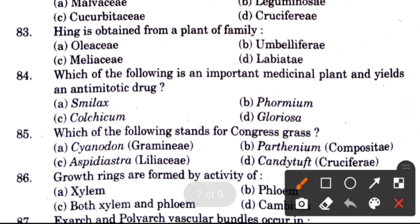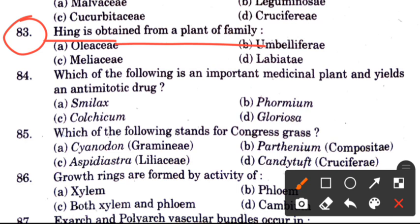Question 83: Hing (asafoetida) is obtained from a plant of which family? Options are Oleaceae, Umbelliferae, Malvaceae, and Lamiaceae. The answer is B, Umbelliferae — the Hing plant belongs to Umbelliferae.